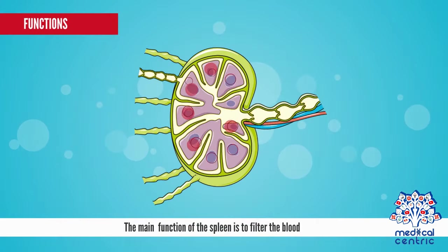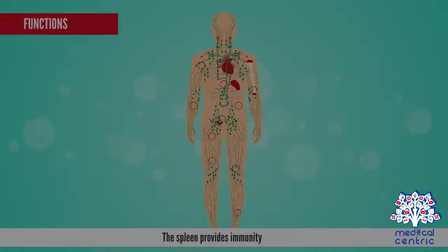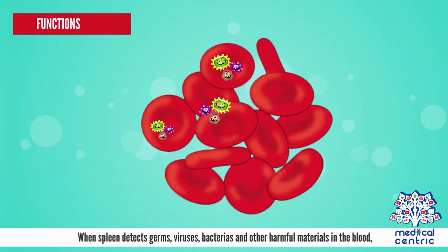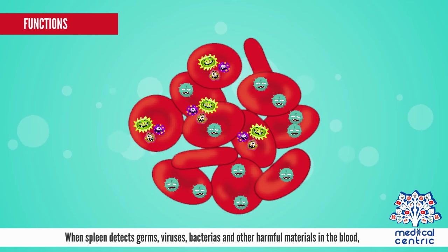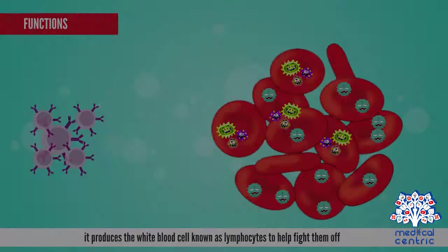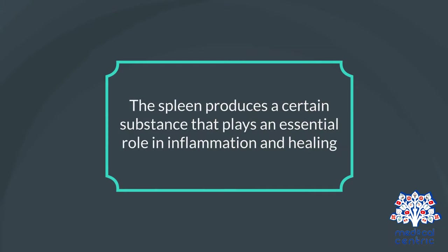The main function of the spleen is to filter the blood. It stores red blood cells, platelets, and white blood cells. The spleen provides immunity — when the spleen detects germs, viruses, bacteria, and other harmful materials in the blood, it produces white blood cells known as lymphocytes to help fight them off. The spleen also produces certain substances that play an essential role in inflammation and healing.